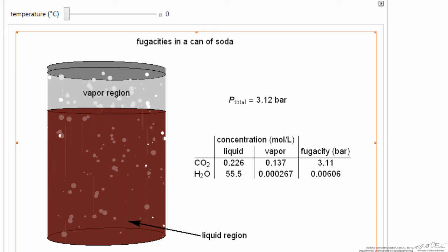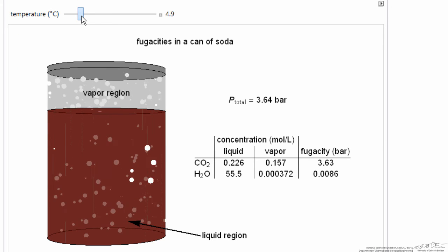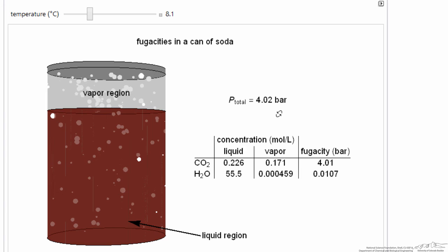Here's the simulation. These are the values we were just looking at. Let's raise the temperature. Of course, the pressure goes up. The CO2 pressure goes up because we're looking at a closed container. As we raise the temperature, we're going to raise the pressure. We're actually also raising the saturation pressure much more significantly.